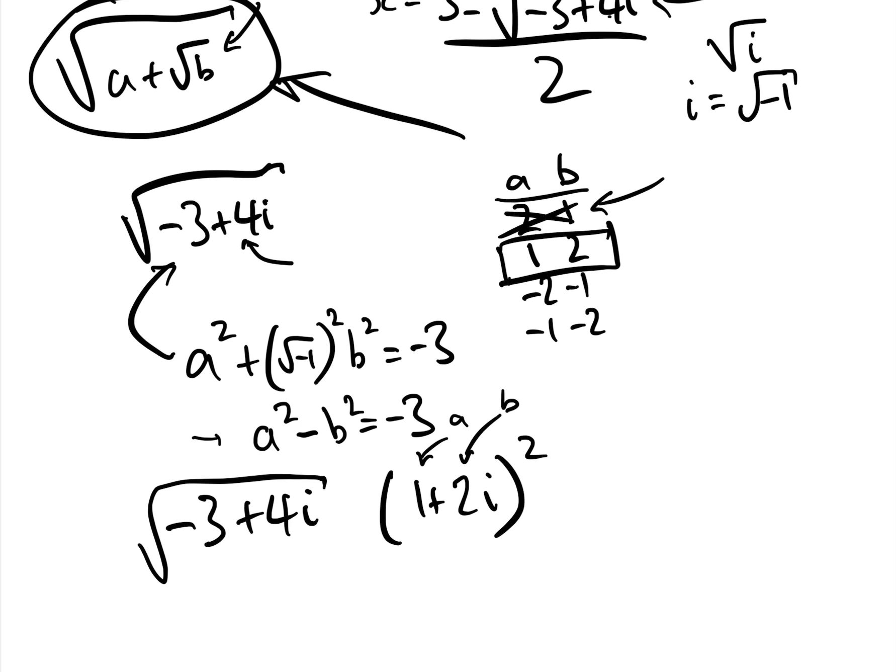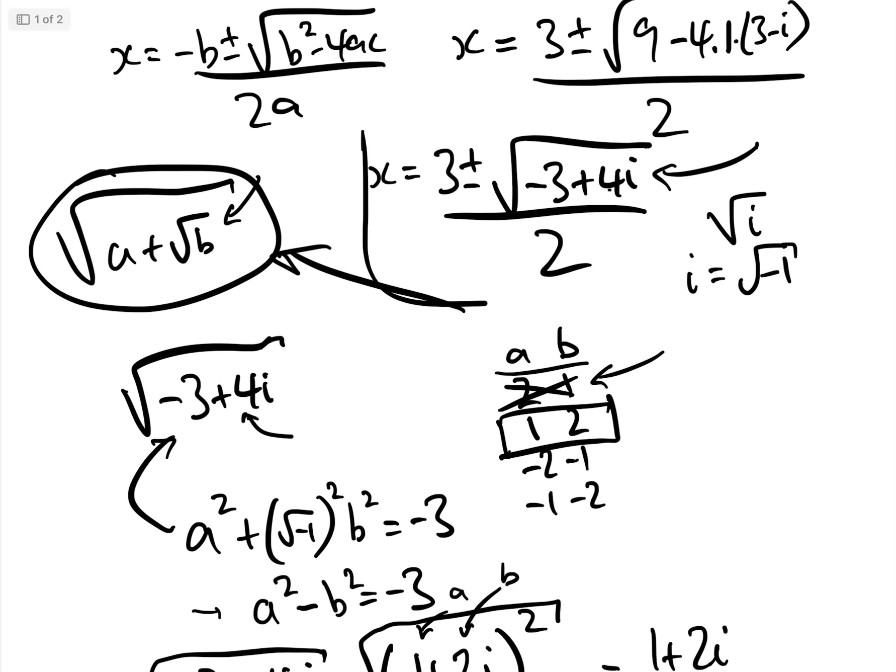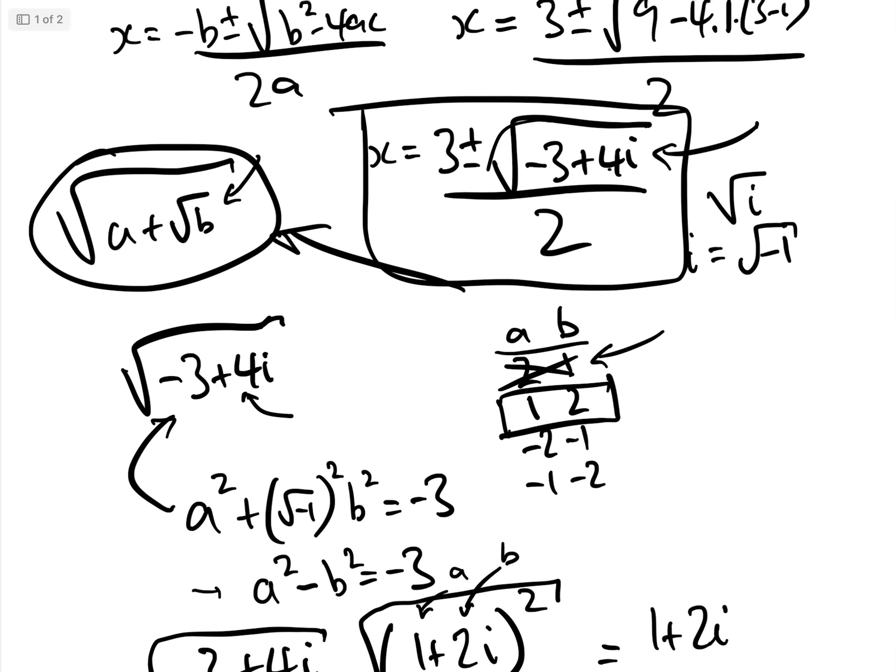And so therefore, the square root of minus 3 plus 4i, which is what we want to find, is the square root of 1 plus 2i squared, which equals 1 plus 2i. And so now we can go right back to our answer here. We have resolved this problem of the square root. We found the square root.